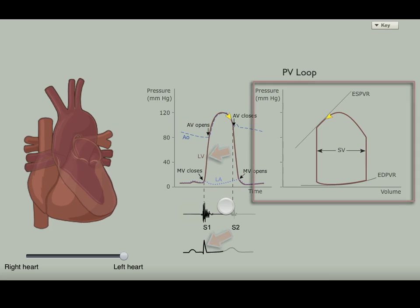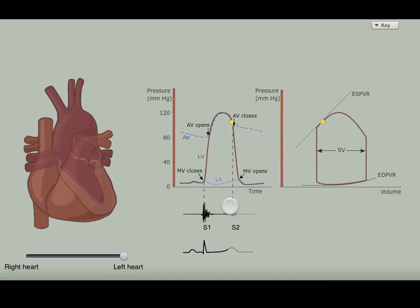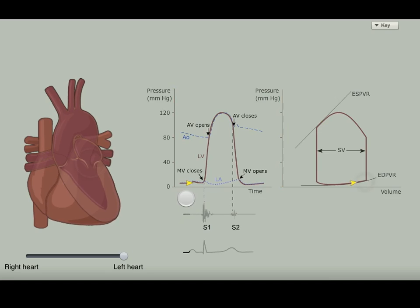The PV loop on the right has no time axis. Its pressure axis is the same as for the Wigger's diagram. You can drag your finger along the time axis of the Wigger's diagram to see that each corner of the PV loop corresponds to the opening or closing of a heart valve.